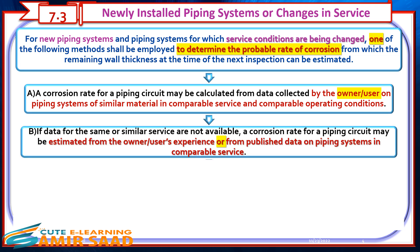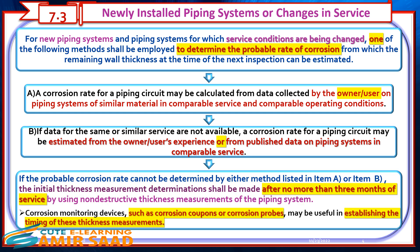If data for the same or similar service are not available, a corrosion rate for a piping circuit may be estimated from the owner or user's experience or from published data on piping systems in comparable service. If the probable corrosion rate cannot be determined by either method A or method B, the initial thickness measurement determinations shall be made after no more than three months of service using non-destructive thickness measurements of the piping system. Corrosion monitoring devices, such as corrosion coupons or corrosion probes, may be useful in establishing the timing of these thickness measurements.